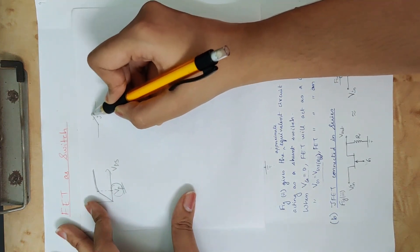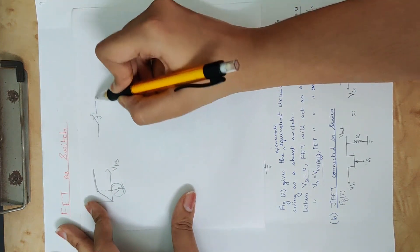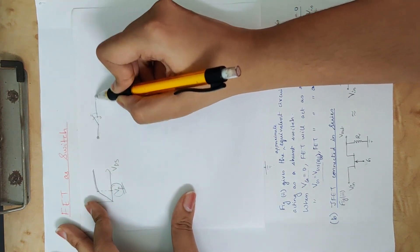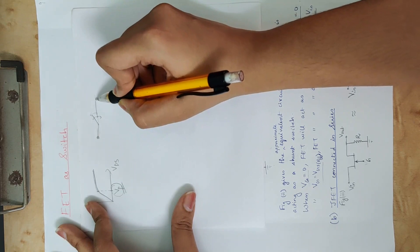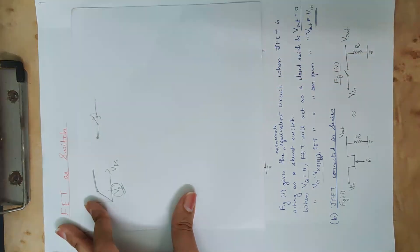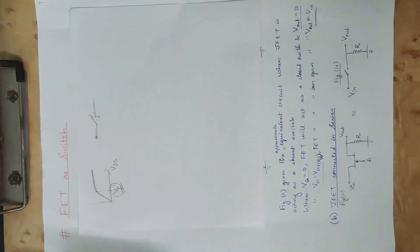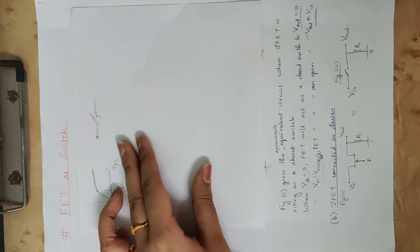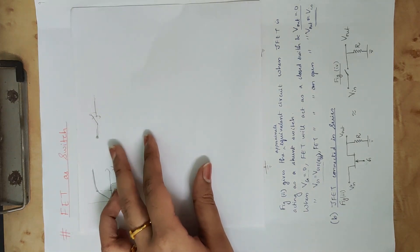If you close the signal from here and open the signal from here, you can block the signal. That is the solution — the switch can act as an open switch or a closed switch.